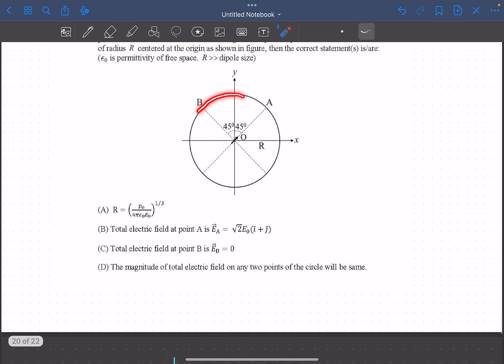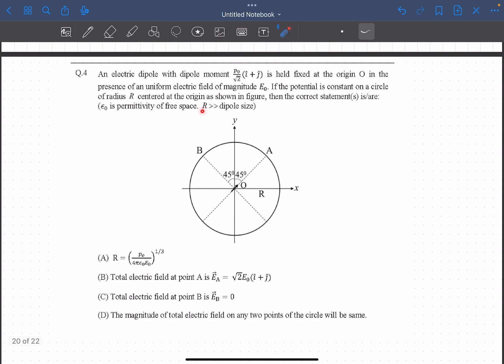The circle depicted in the picture is an equipotential surface, meaning that at each point on the surface, the electric field must be perpendicular to the surface. It's also given that the radius of the circle is much greater than the dipole size, so you can treat this as a point dipole.